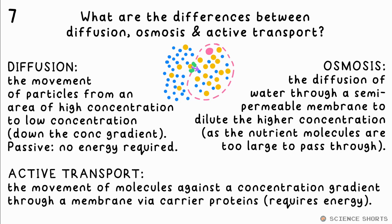Active transport is the movement of molecules from a low concentration to a high concentration — against the concentration gradient. This happens across a membrane via carrier proteins and requires energy, hence the 'active' part. This is how minerals get into root hair cells, which already have a higher concentration compared to the soil.